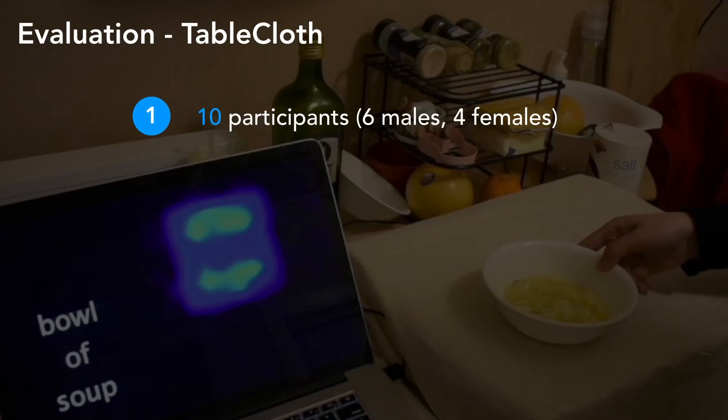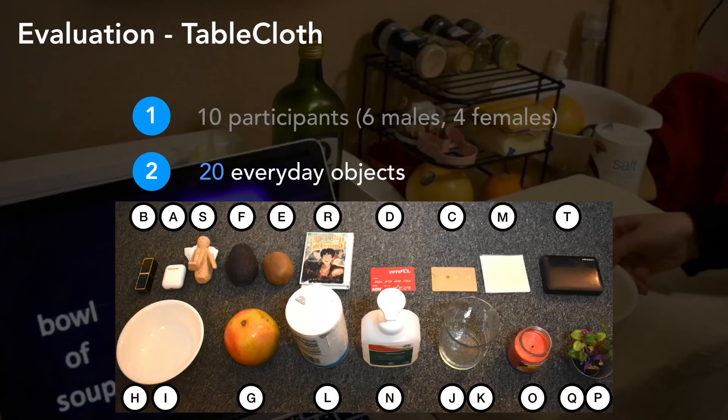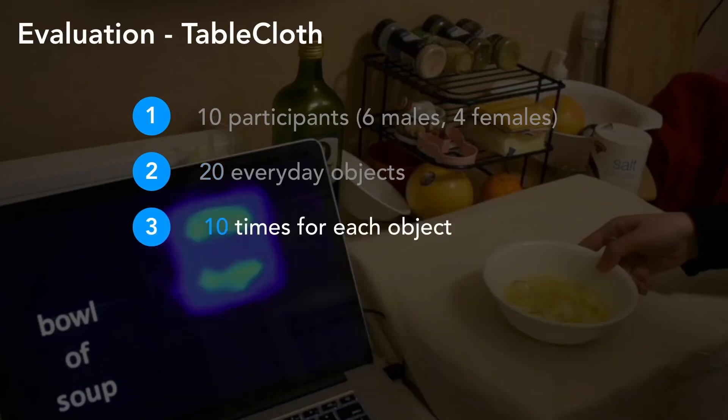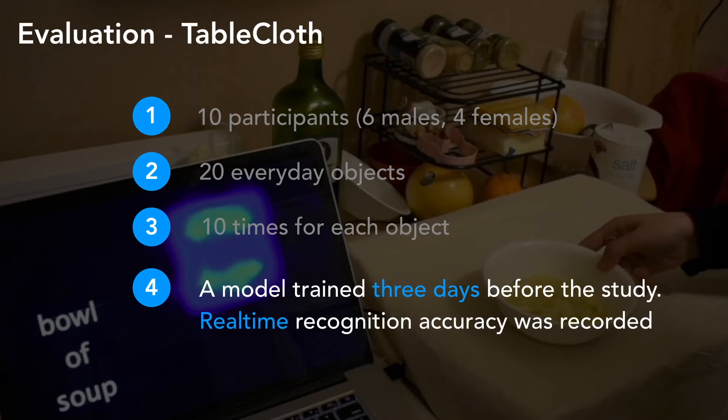To validate the sensor accuracy and robustness, we ran a 10 participants study. We tested 20 everyday objects, including kiwi, avocado, grapefruit, pretzel, and so on. Each object was repeated for 10 times in a randomized order. We pre-trained a model 3 days before the study, and we ran real-time recognition in the study.